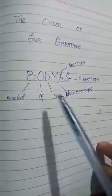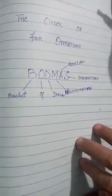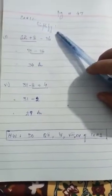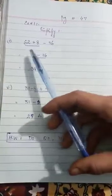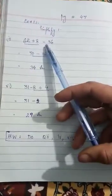Let's see the exercise on page number 47. Exercise number 1 is: Simplify. Expression number 1 is 62 plus 8 minus 36. In this expression there are two operators — a plus operator and a minus operator.